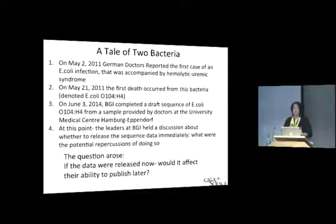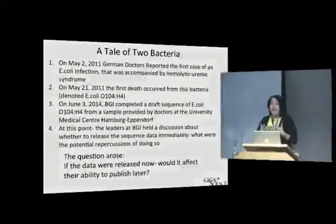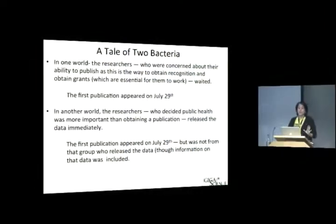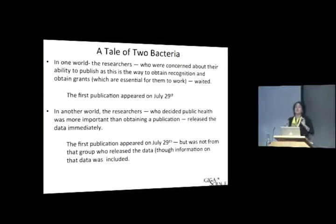It's an important question, actually, because a scientist's funding and recognition comes from publishing. Currently, that is the mechanism by which a scientist is able to continue to produce. But in balance with this is the fact that people were dying. So in one world, you have researchers who are rightly concerned about their ability to publish and their ability to get recognition in grants, who wait — and the first publication appears about two months later. In another world, the researchers decided that public health was more important than obtaining a publication, and they released the data early.